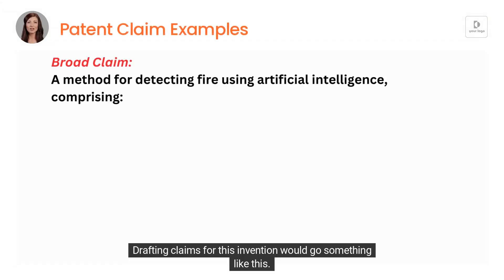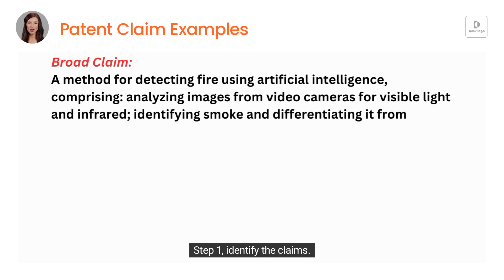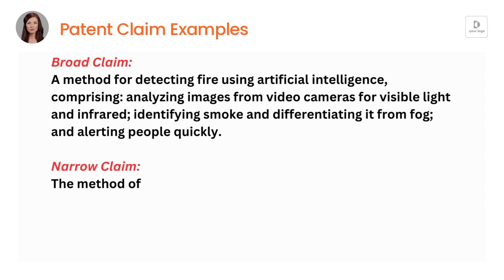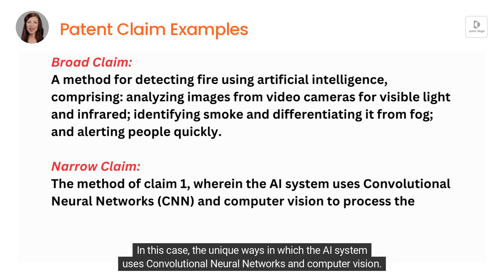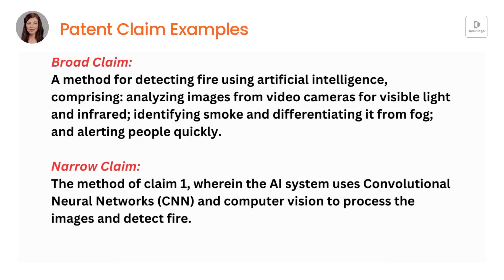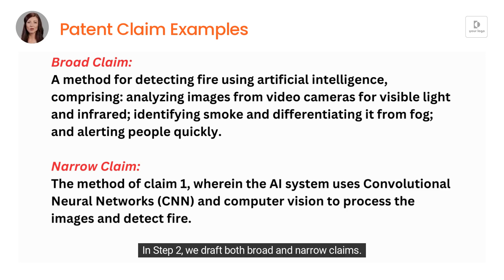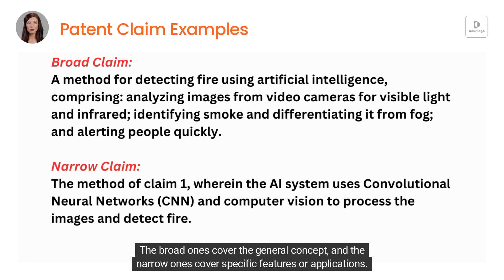Drafting claims for this invention would go something like this. Step one: identify the claims — in this case, the unique ways in which the AI system uses convolutional neural networks and computer vision. In step two, we draft both broad and narrow claims. The broad ones cover the general concept, and the narrow ones cover specific features or applications.